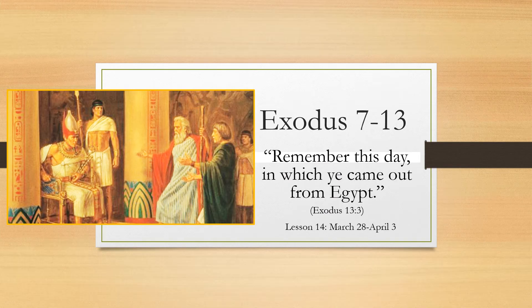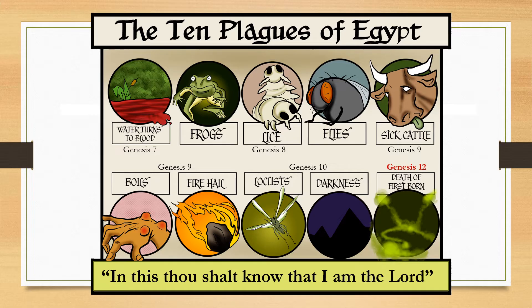The next lesson is 'Remember this day in which we came out from Egypt.' In Exodus chapters 7 through 12, we learn about the 10 plagues of Egypt. In chapter 7, the water turns into blood. From chapter 8, we get the frogs, the lice, and the flies. In chapter 9, we get the sick cattle along with the boils and the fire and the hail. In chapter 10, we have the locusts, then darkness. Then after the darkness comes a very important chapter — chapter 12 — the death of the firstborn. All of these are representations of what the Lord says: 'In this thou shalt know that I am the Lord.'